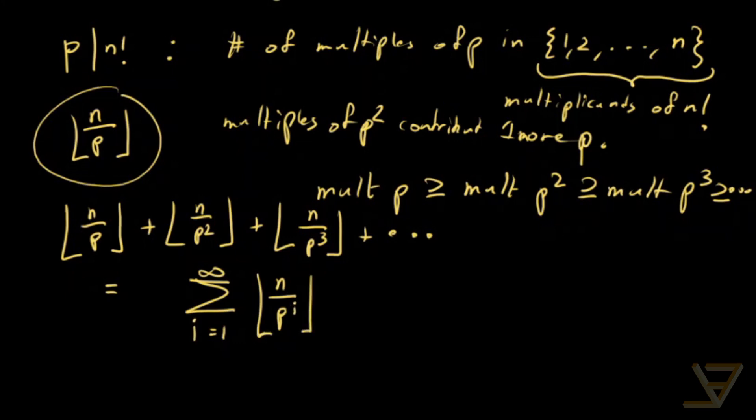And notice that all sufficiently large terms, sufficiently large index terms, are zero. Because sooner or later p to the i is going to exceed n. So you're just going to be getting a bunch of zeros as a tail end.